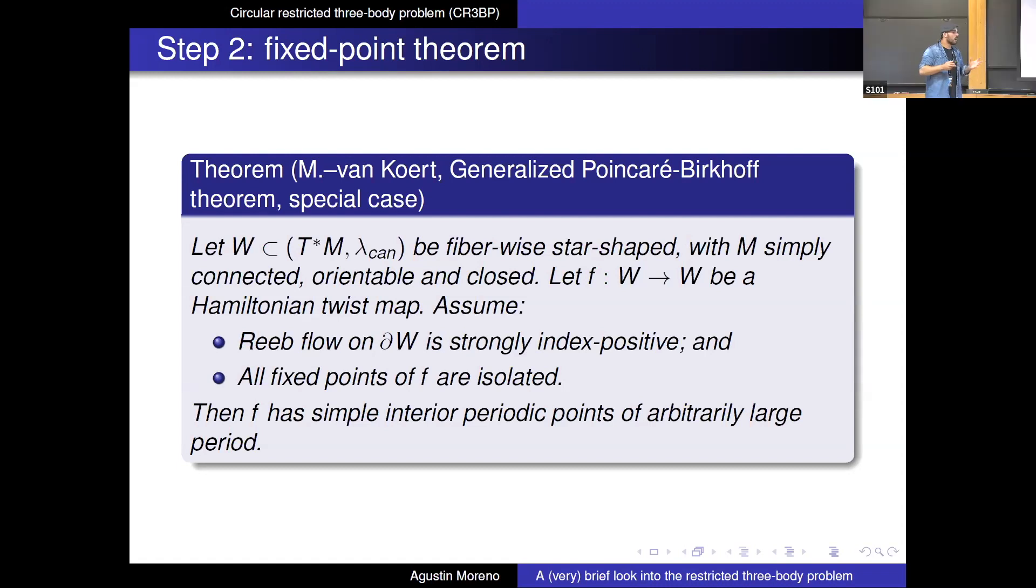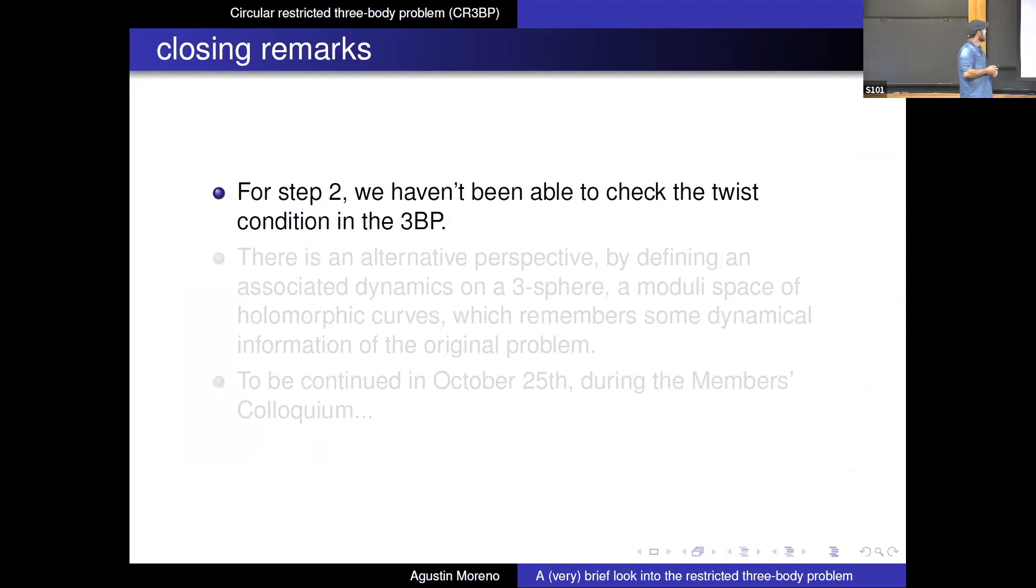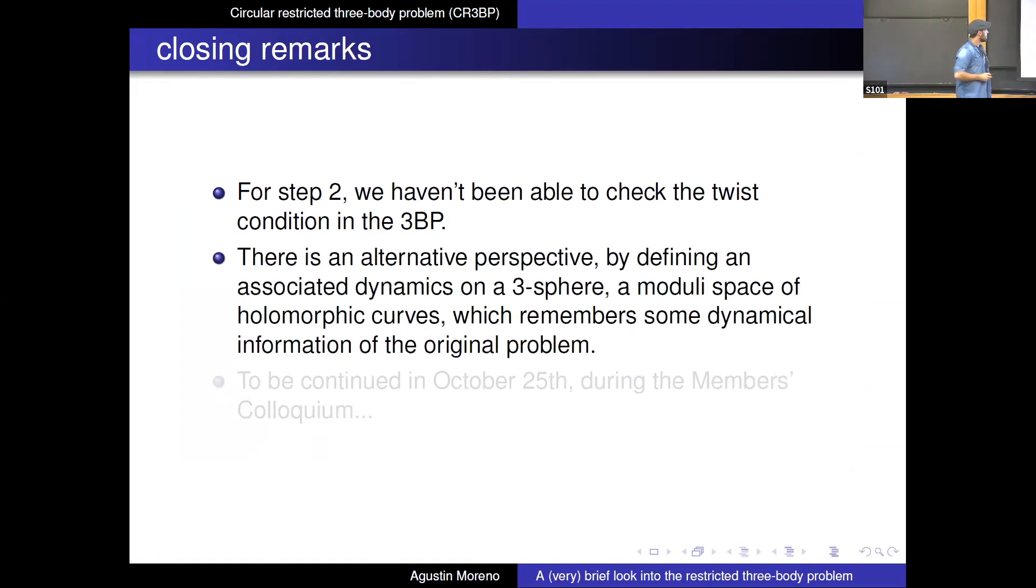So this is our sort of proposal for the step two behind images. Okay, so let me close with the following remarks. So for step two, we actually haven't been able to check the twist condition and the three-body problem. So I know that my map is Hamiltonian, but I don't know if there's a generating Hamiltonian, which sort of runs in the direction of the wave-like boundary. So this is a very, very, actually very subtle thing to check. And it might be very, very hard.